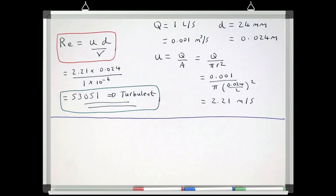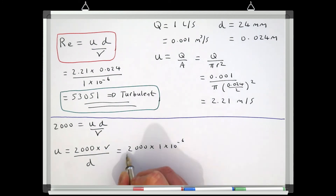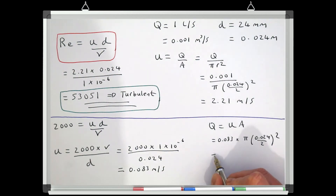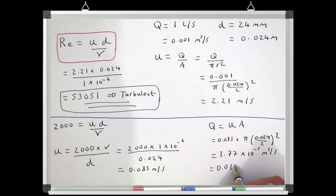Let's do this calculation the other way around. We have the same pipe with a diameter of 24mm, but we want the system to run under laminar flow conditions. Can we work out the maximum discharge that still gives us laminar flow? For the flow to be laminar, Reynolds number must be 2000 or below. We rearrange the equation to find the velocity that gives Reynolds number = 2000, which gives a velocity of 0.083 m/s. Multiplying this by the pipe's cross-sectional area gives the maximum discharge for laminar flow: 0.0377 litres per second.